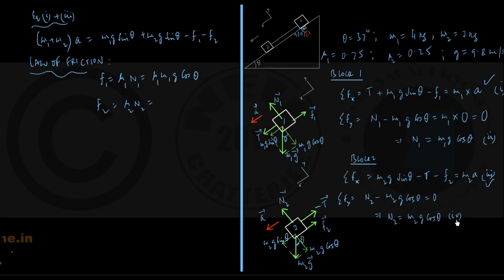And then again, from equation number 4, n2 is equal to m2g into cos theta. Therefore, f2 is coming out to be mu2 into m2g into cos theta.